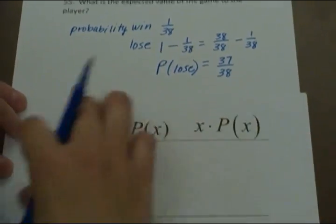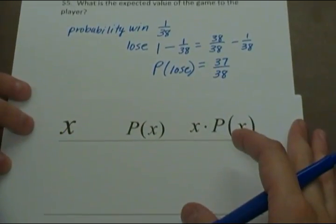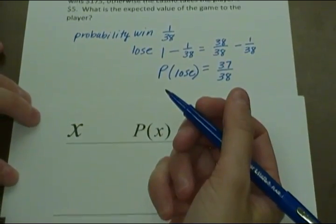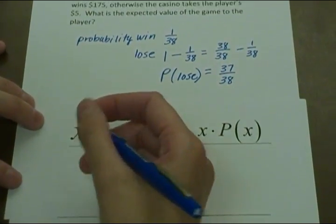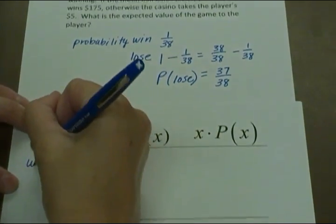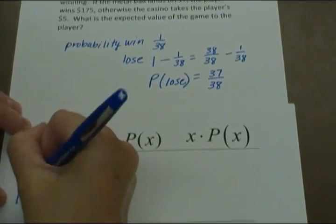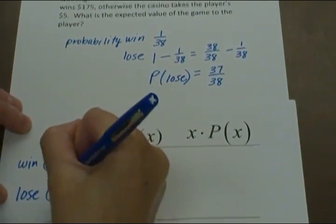Setting up a table is the easiest way to calculate expected value. X would be the money aspect. So either we're going to win, and if we win, we are going to be happy. Or we're going to lose, and that's going to make us sad.